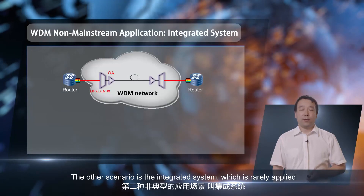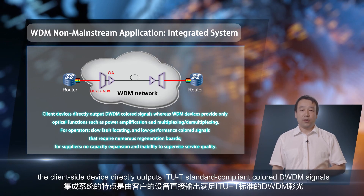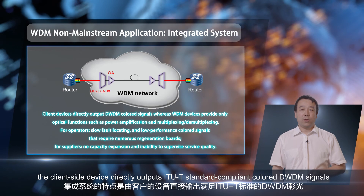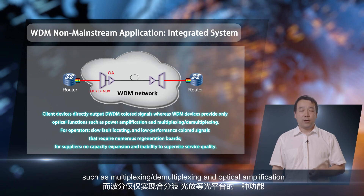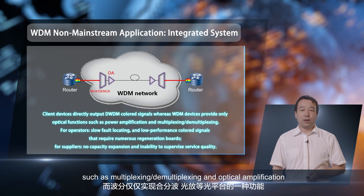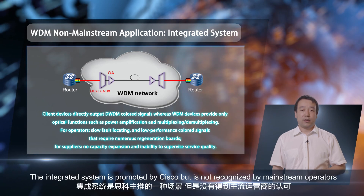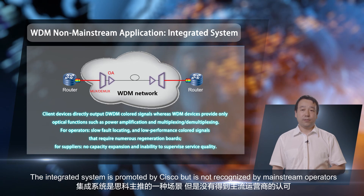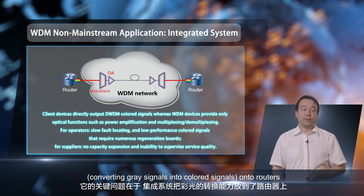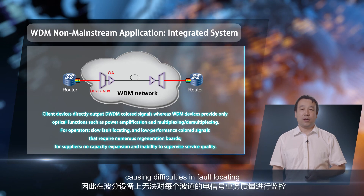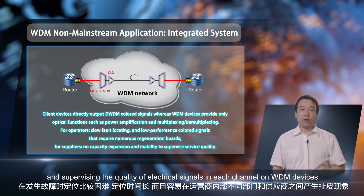The other scenario is the integrated system, which is rarely applied. In an integrated system, the client-side device directly outputs ITU-T standard-compliant colored DWDM signals, and the WDM system provides only optical layer functions such as multiplexing, demultiplexing, and optical amplification. This application occupies only less than 10%. The integrated system is promoted by Cisco but is not recognized by mainstream operators. The key factor is that integrated systems allocate the OTU function of converting gray signals into colored signals onto routers, causing difficulties in fault locating and supervising the quality of electrical signals in each channel on WDM devices.